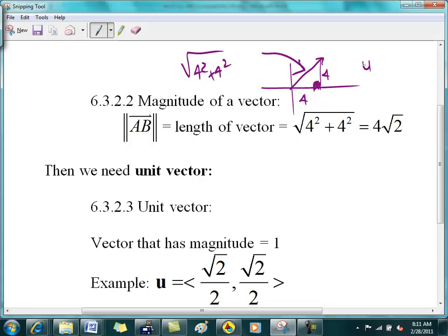So if you are given a vector like in this form here in component form as 4 comma 4, then the magnitude is this. Does everybody understand that?